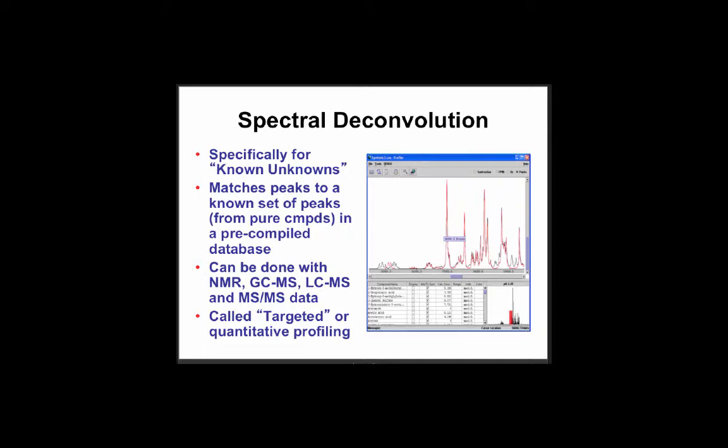That identification of known unknowns is what I call quantitative metabolomics. People can call it targeted, but it's also untargeted, because in the case of NMR and GC-MS, you're not really targeting. So that's the theme for today, at least for module 2.